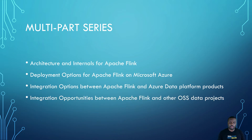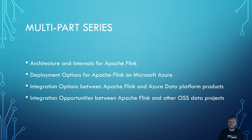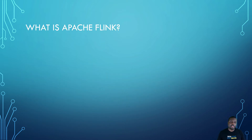We will also cover the different integration options between Apache Flink, its ecosystem, and the data platform offerings on Microsoft Azure — including storage, Event Hubs, Cosmos DB, and many other native Azure data platform solutions. We'll also cover how Apache Flink integrates with open source projects like Apache Kafka, Elasticsearch, and Apache Beam. If there's anything specific you'd like me to prioritize, please let me know.